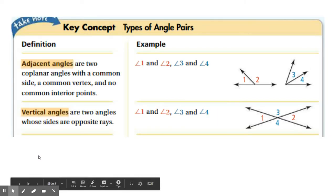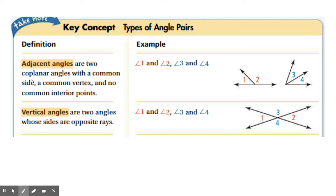All right, so we're looking here at a couple of different types of angle pairs. The first pair is called adjacent angles. They are two coplanar angles with a common side, a common vertex, and no common interior points. Look at this picture here. Angle 1 and angle 2 are adjacent. Angle 1 opens to the left, angle 2 opens to the right. They share a vertex and this common side, and they don't share any common interior points. Same thing with 3 and 4.